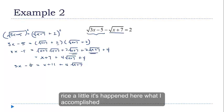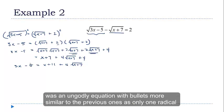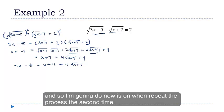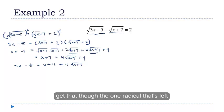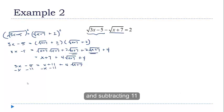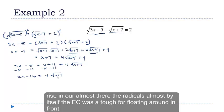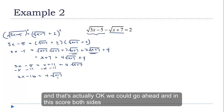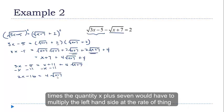What I accomplished was eliminating one of the radicals from the equation. Now I'm down to an equation with only one radical, so I'm going to repeat the process a second time — get the remaining radical by itself. I'll subtract x and subtract 11, which gives: 2x minus 16 equals 4 times the square root of x plus 7. The radical is almost by itself; we still have that 4 in front.